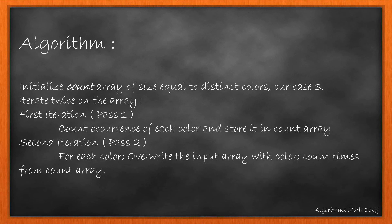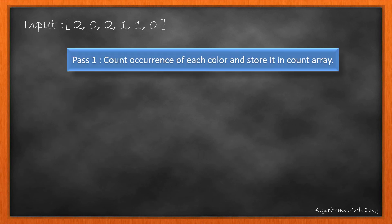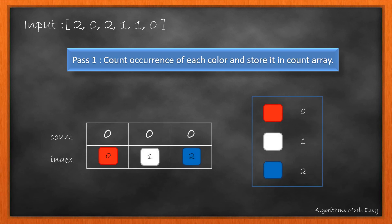Let's see it with an example. We will perform the first iteration in which we count the occurrences of each color and store it in a count array. So let's first initialize our array with index 0 depicting red, 1 depicting white, and 2 depicting the blue color.